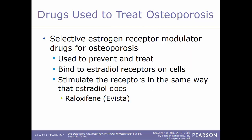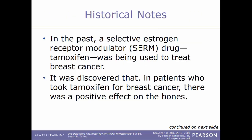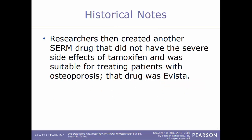Selective estrogen receptor modulators (SERMs) are used to prevent and treat osteoporosis. They work by binding to estradiol receptors on cells and stimulating those receptors in the same way estradiol does. An example is raloxifene, sold as Evista. Previously, the SERM tamoxifen was used to treat breast cancer, and a positive effect on bone was discovered in those patients. Researchers then created a SERM drug without tamoxifen's severe side effects that was suitable for treating osteoporosis — and that drug was Evista.